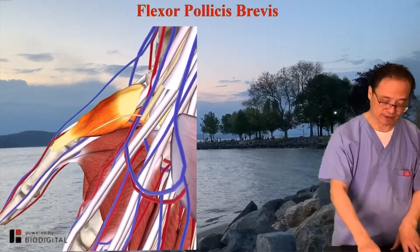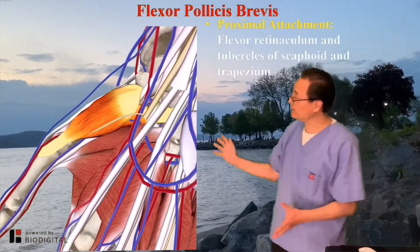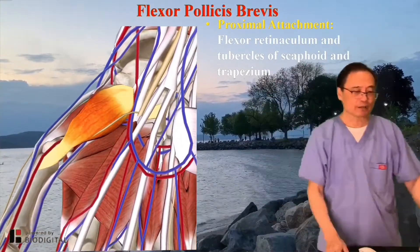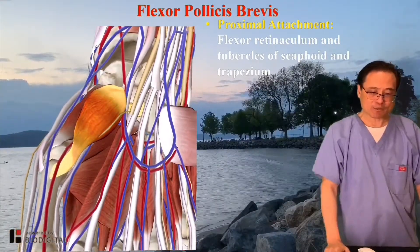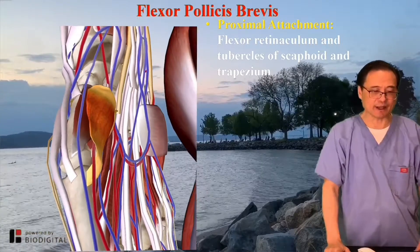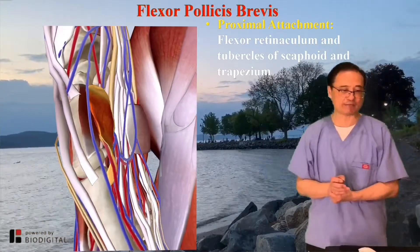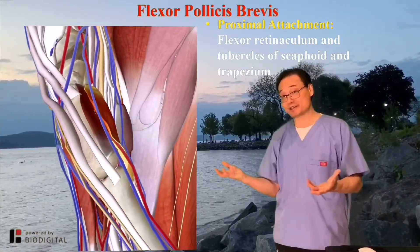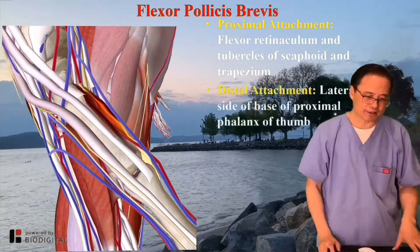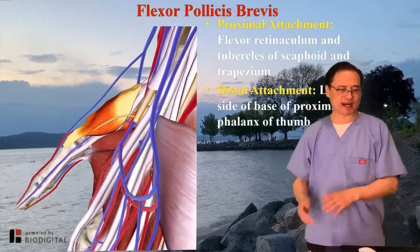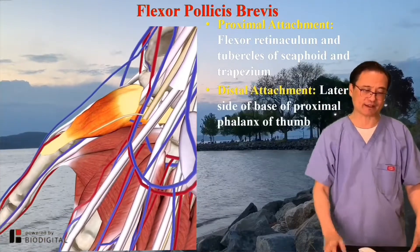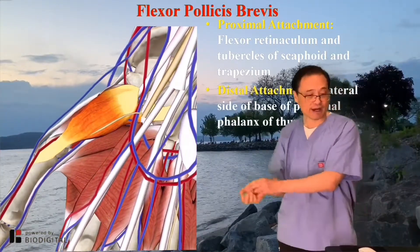Next, the Flexor Pollicis Brevis. The proximal attachment is the flexor retinaculum, and tubercles of the scaphoid and trapezium — pretty much the same area. The distal attachment is the lateral side of the base of the proximal phalanx of the thumb.